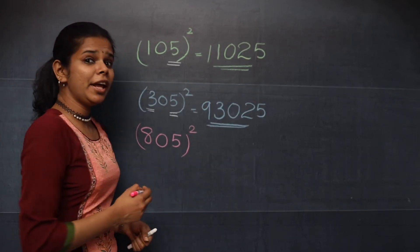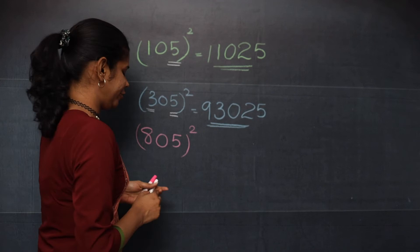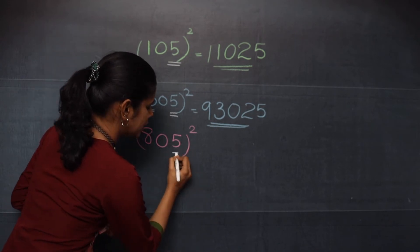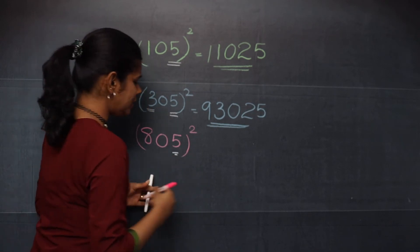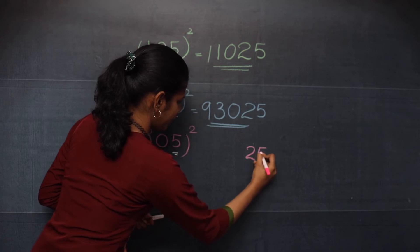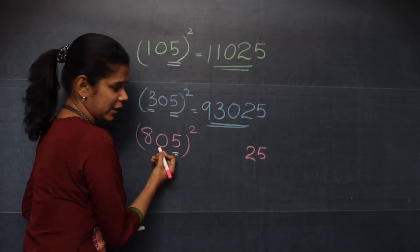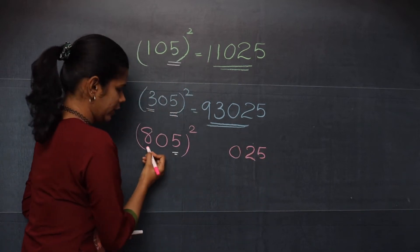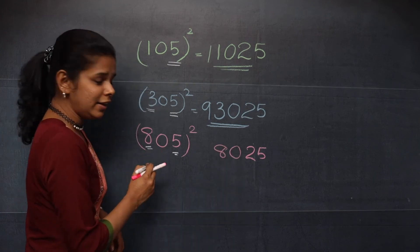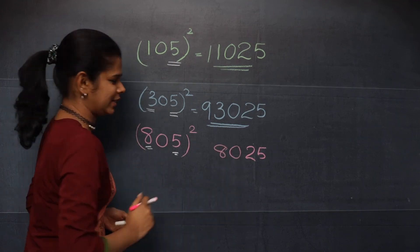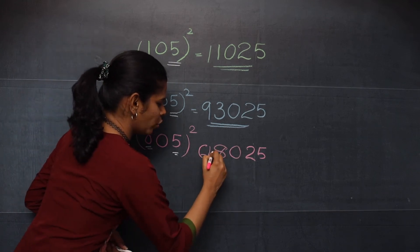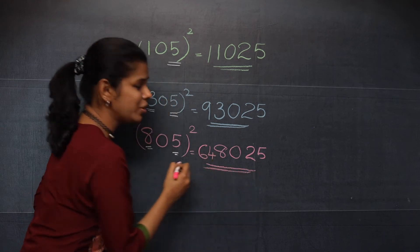How about 805 the whole square? The first step, you will take the square of 5, that is 25. You will write the next number, that is 0, then 8 and then the square of 8, that is 64. So this becomes your answer.